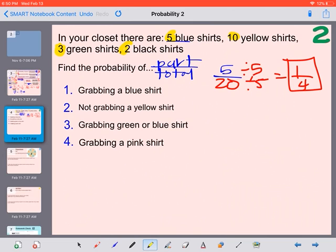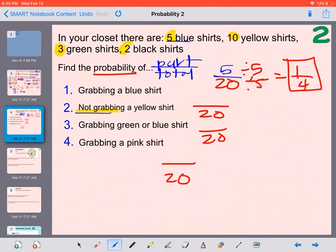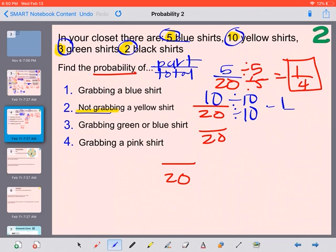Next, what's the probability of not grabbing a yellow shirt? We're looking at probability, not odds. So it's still out of a total of 20. Since it says probability, your total is going to be 20 on the bottom. Not grabbing a yellow shirt. Well, if there are 10 yellow shirts, that means there are also 10 other shirts that are not yellow. 5 plus 2 plus 3. So that gives us 10 out of 20. If we simplify and divide by 10, that gives us 1 out of 2.